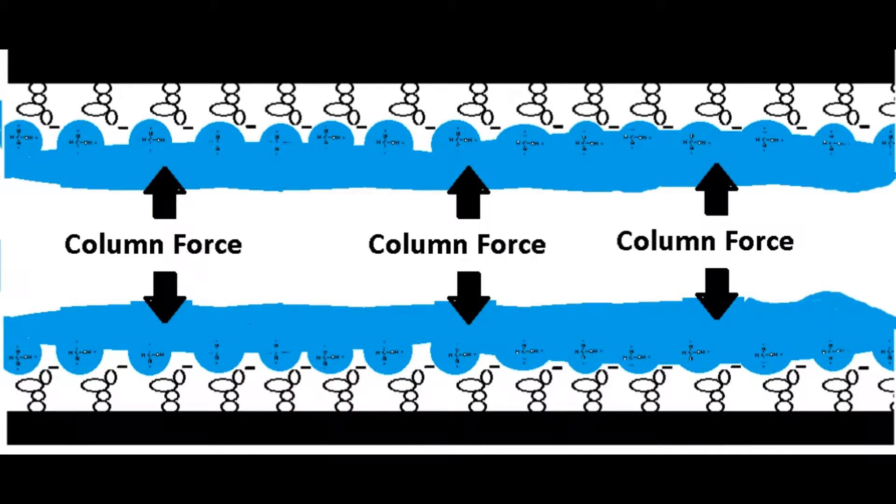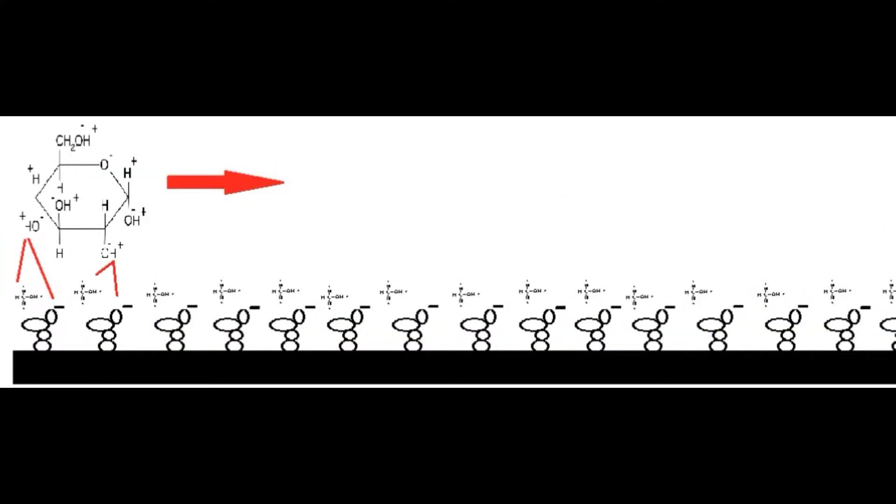The length of each column indicates how long the column has to interact with the sample. Rather obviously, the longer the column, the more time it has to separate out substances within it and to either speed up or retard the progress.